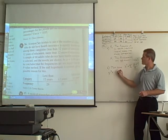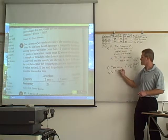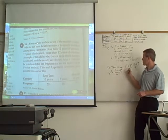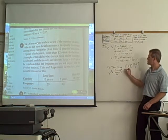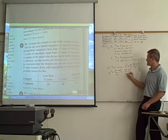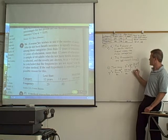Observed minus expected, so 29 minus 20, squared divided by 20. Plus, that means sum. 20 minus 20, which would be 0, squared over 20. Plus, 11 minus 20 squared over 20.